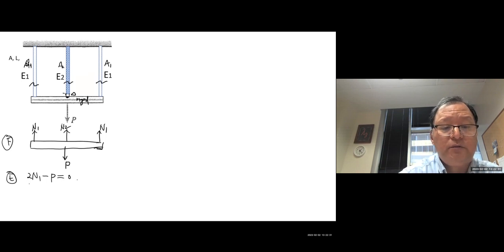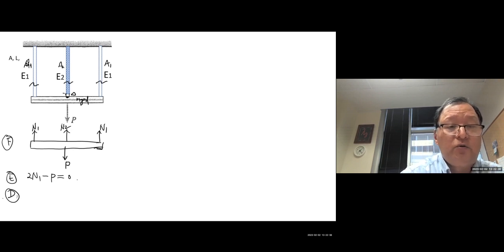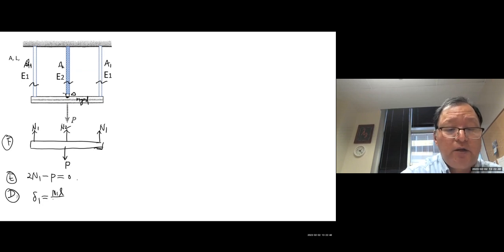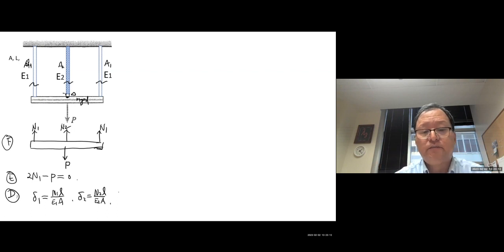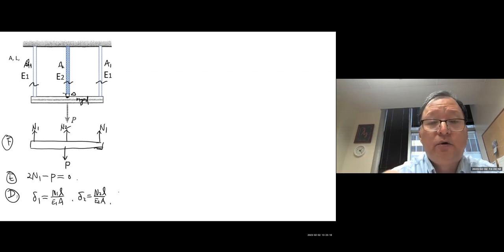Deformation equations: bar 1 deforms delta_1 = N1·L / (E1·A), and bar 2 deforms delta_2 = N2·L / (E2·A2). Bar 3 is the same as bar 1, so delta_3 = delta_1. Now what is the compatibility equation?